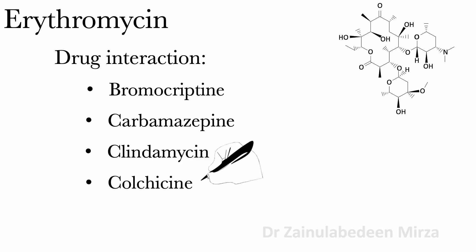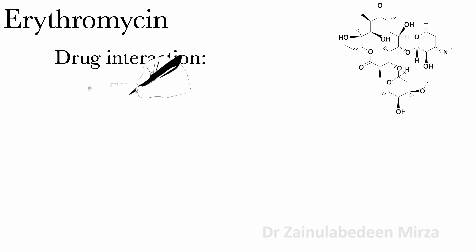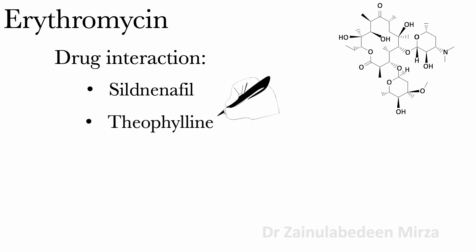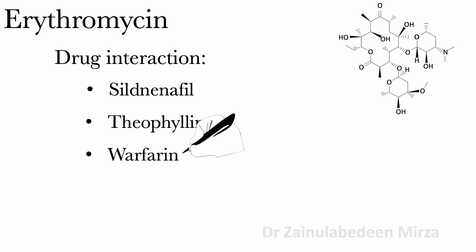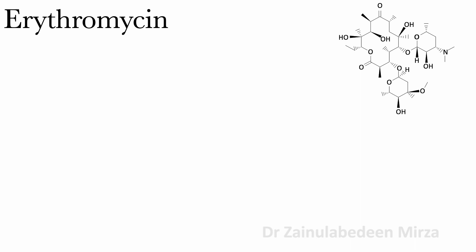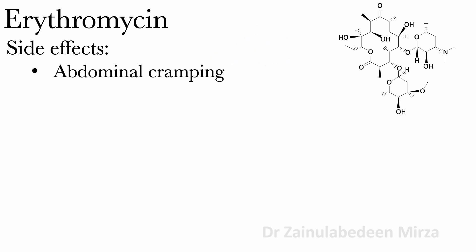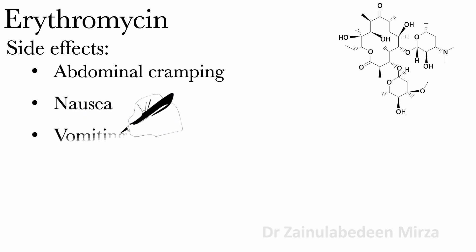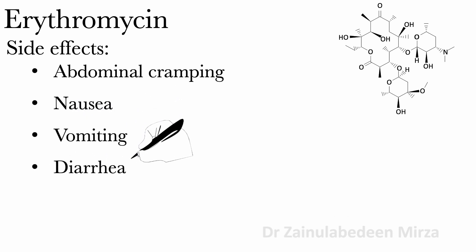Colchicine significantly increases colchicine levels. Common side effects of erythromycin are abdominal cramping, nausea, vomiting, diarrhea, and rash.